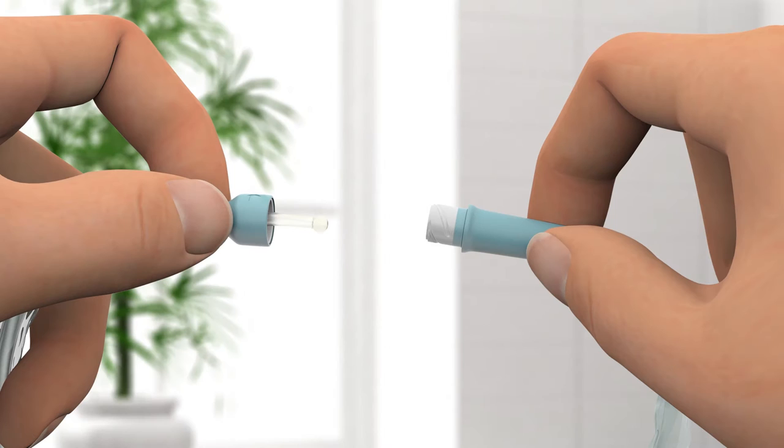Make sure that the catheter tip does not touch anything before you enter it into the urethra. If it does, you must use a new catheter. Touching the sink or your clothes or skin, for example, will contaminate the catheter and can potentially cause infection.